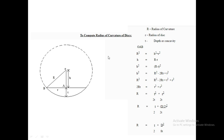To compute the radius of curvature of the disc, an imaginary circle is drawn connecting the outer edges of the disc. The cross-section of the disc is shown with the radius of curvature R (capital R), the depth of concavity t, and the disc radius r (small r). Using this geometry, we can calculate R.